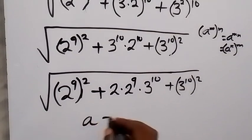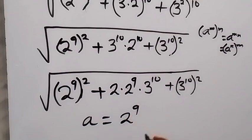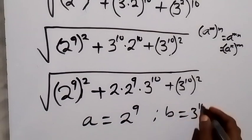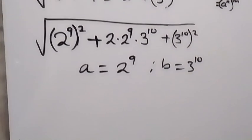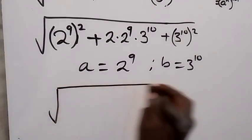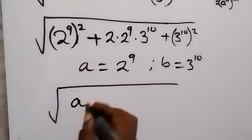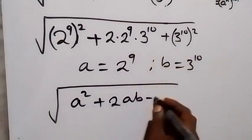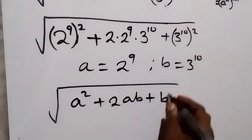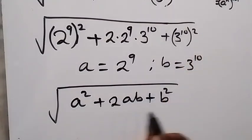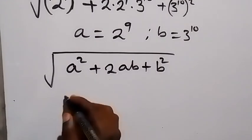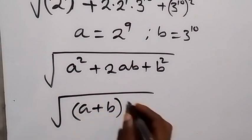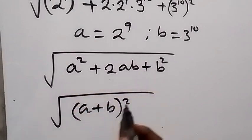Let a represent 2 raise to power 9, and b represent 3 raise to power 10. When we write this out, we have root of a squared, plus 2ab, plus b squared. When we look at this, we can write it as root of (a plus b) all squared, because that expansion gives us exactly this back.